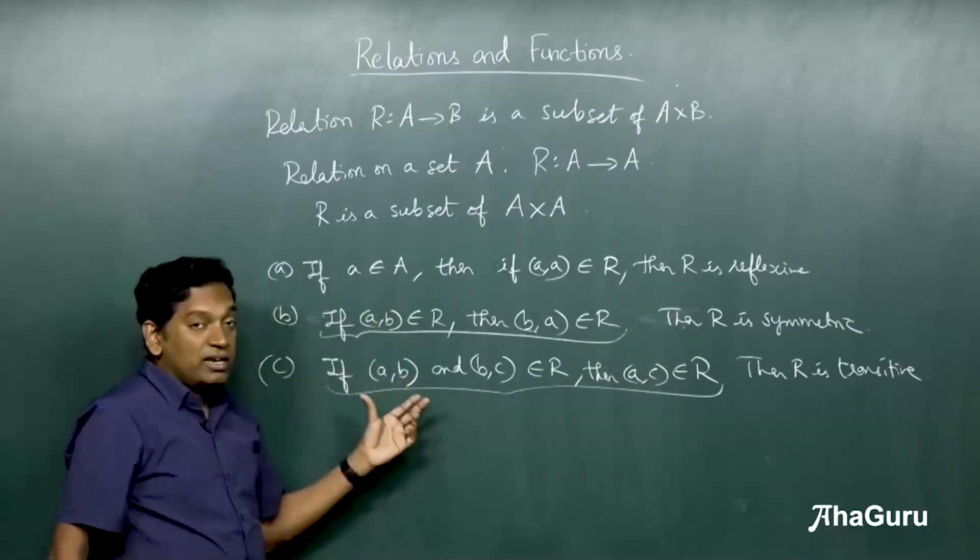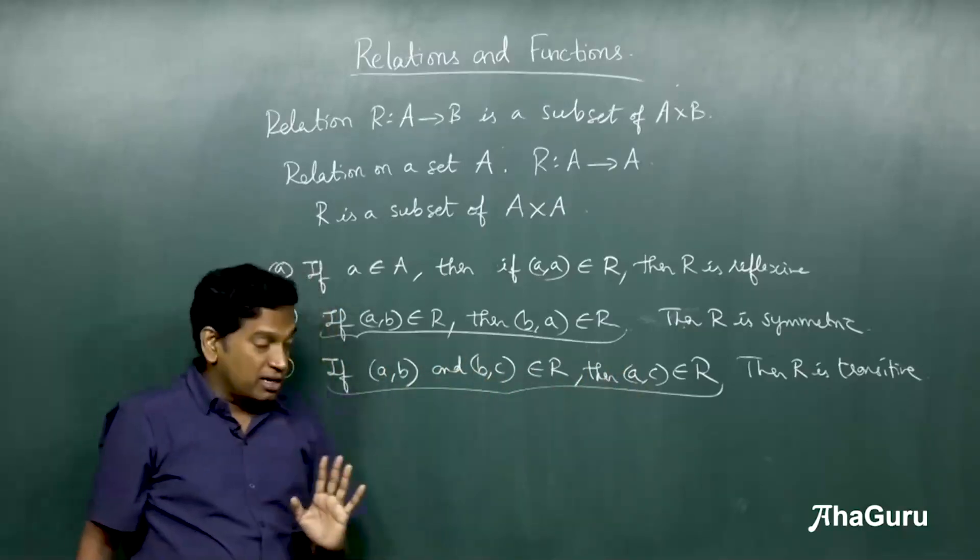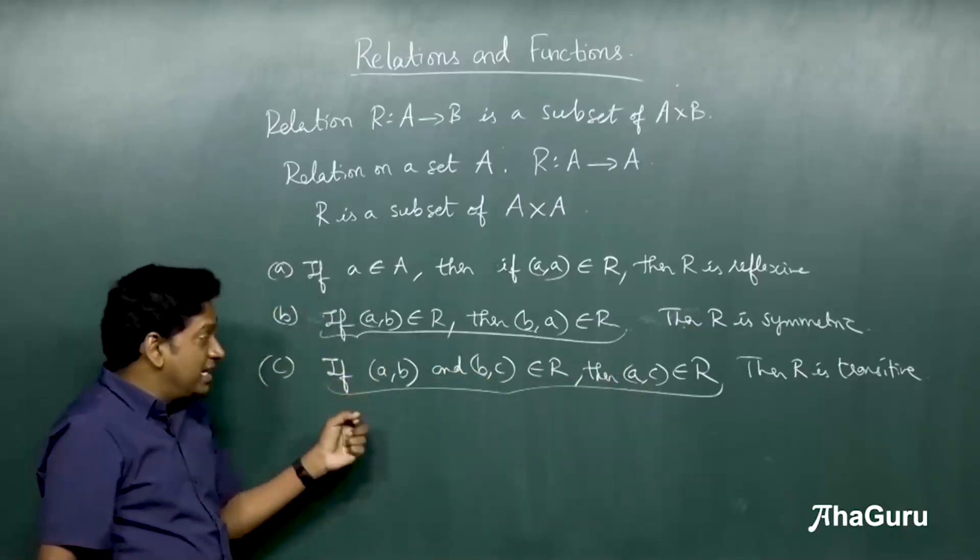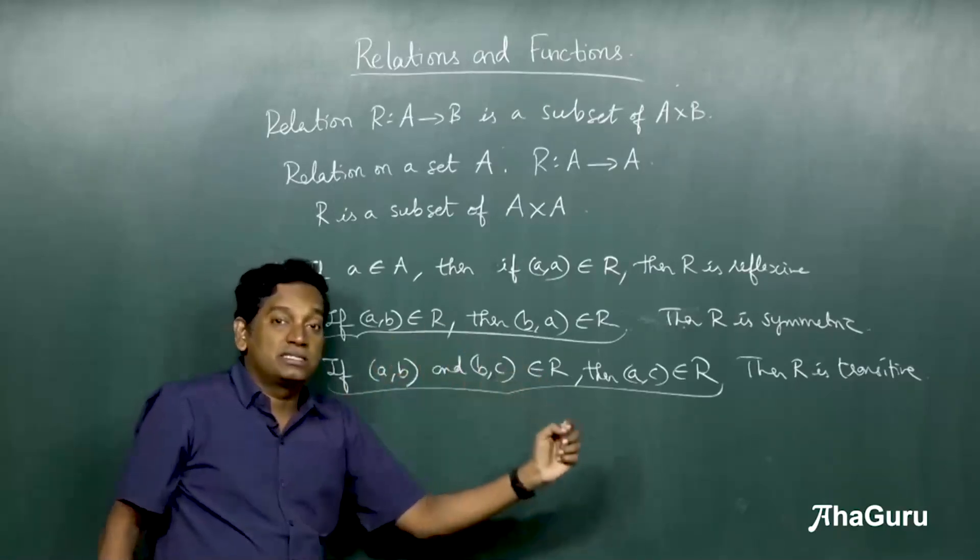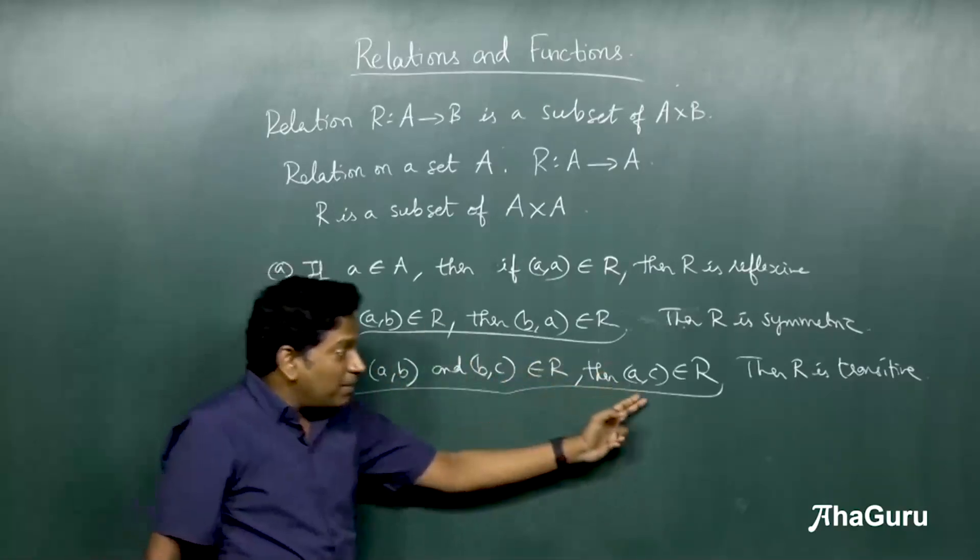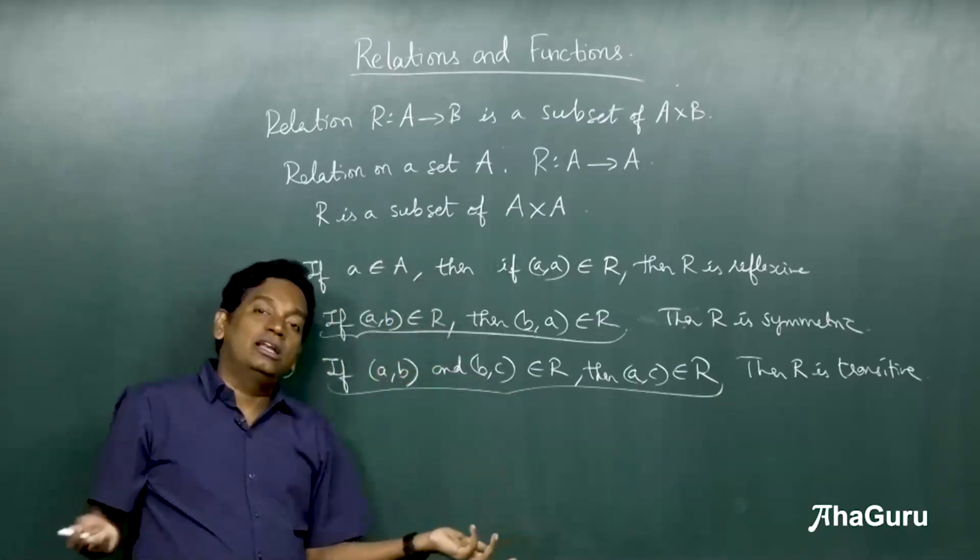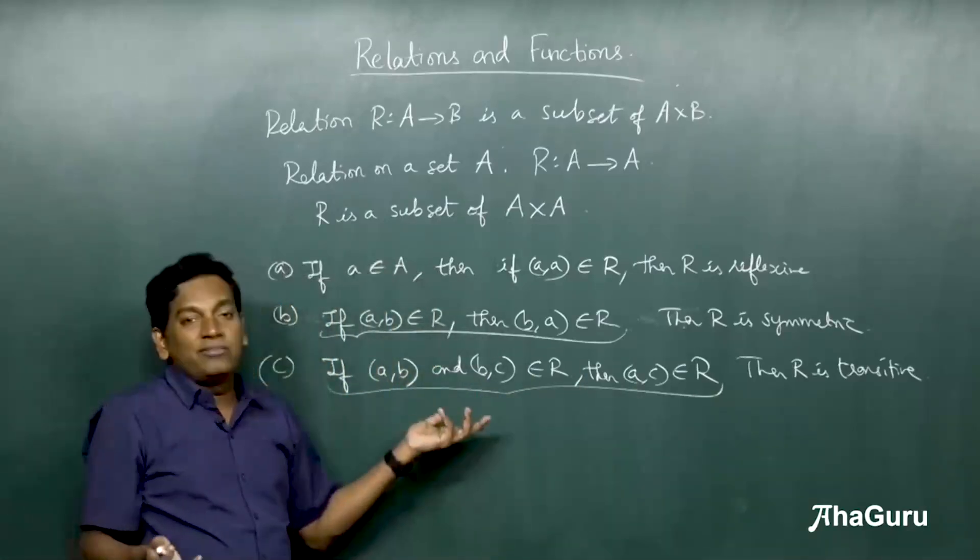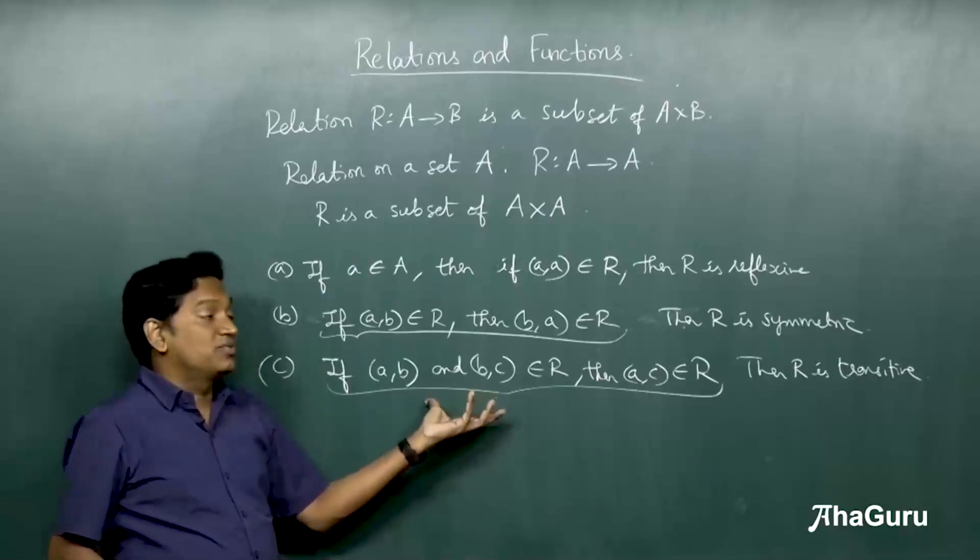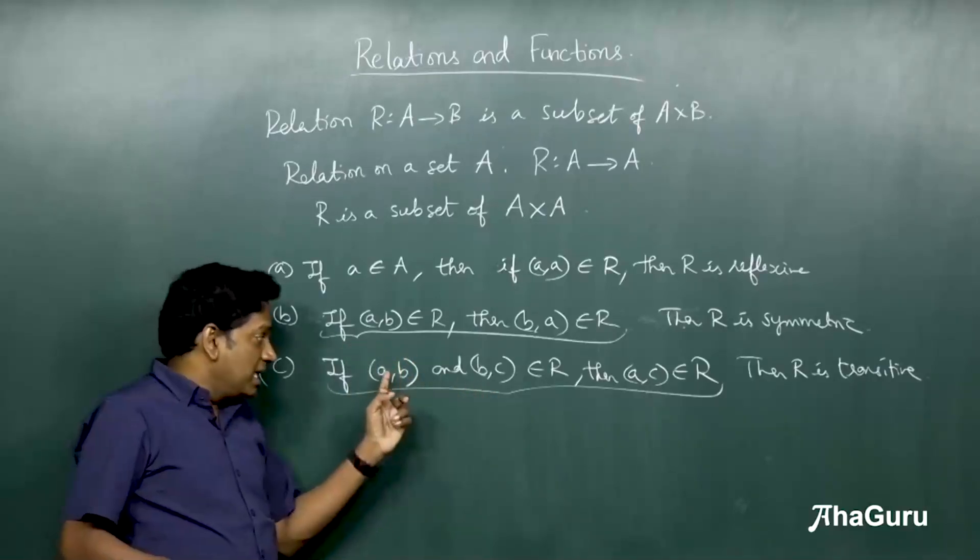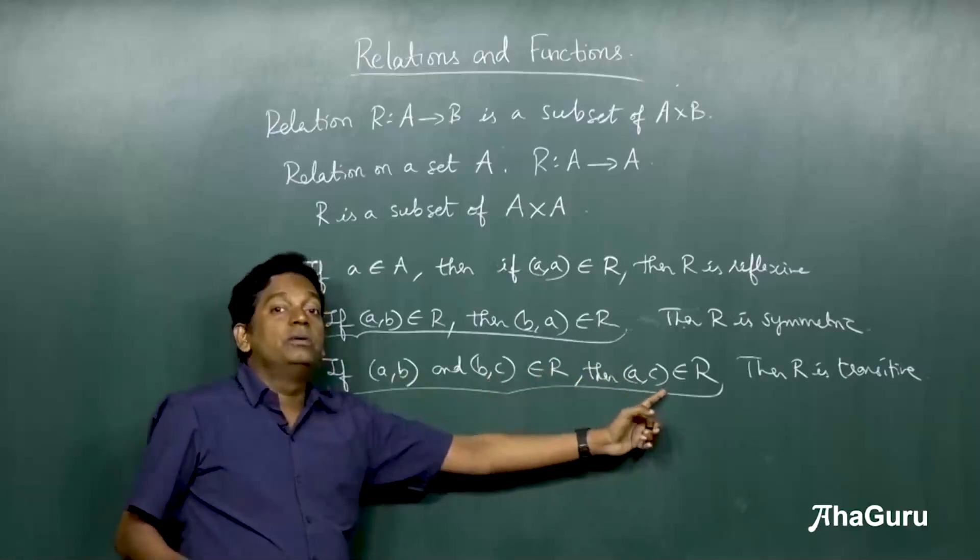Similarly, here, it doesn't say that the triplet AB, BC and AC must belong to R. For transitive, what we need is, if A comma B and B comma C are two elements, then A comma C must also be an element. What if A comma B and B comma C are not elements of R? Well, then we don't have to bother at all. The condition only says, if these two are present, then this must also be present.